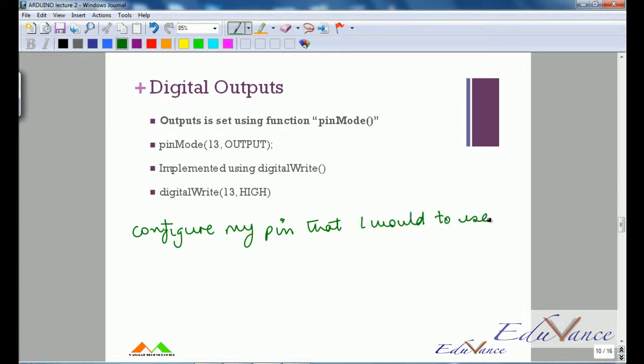Let's say, for example, I want to use pin number 13 and I would like to use it as an output. I would do that using the function pinMode, and this is how I would use it: using pinMode, I would like to configure pin number 13, and the type it should be OUTPUT.